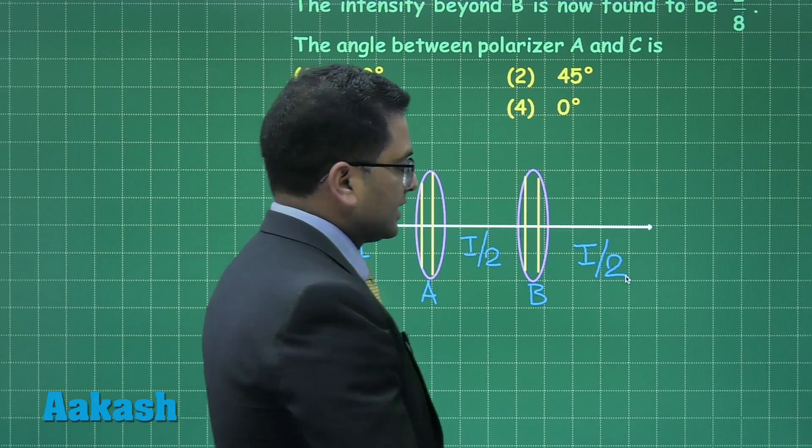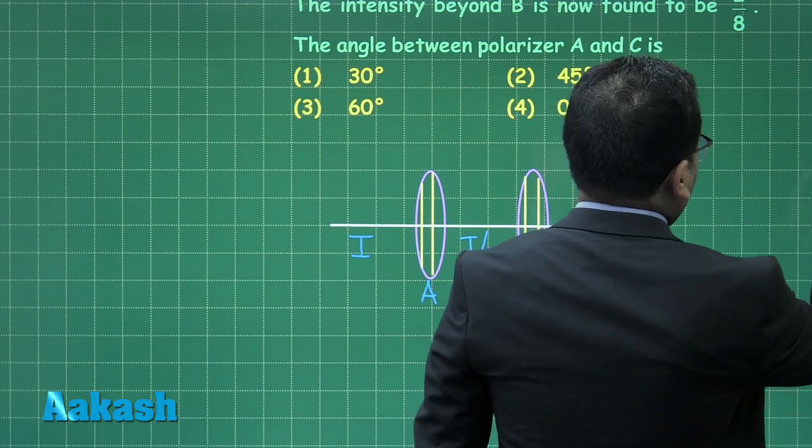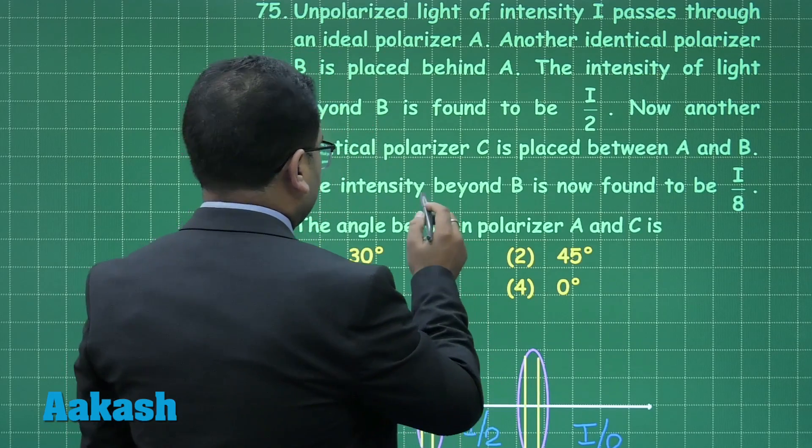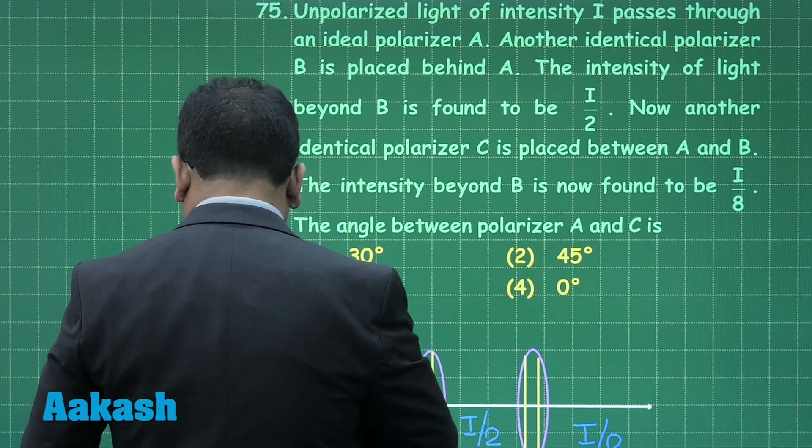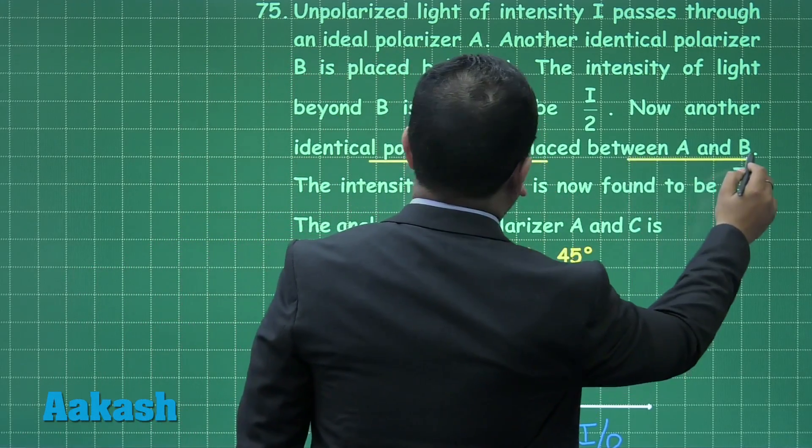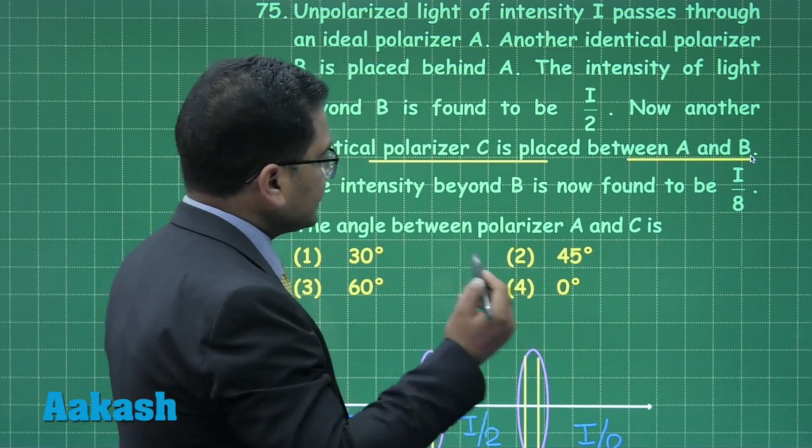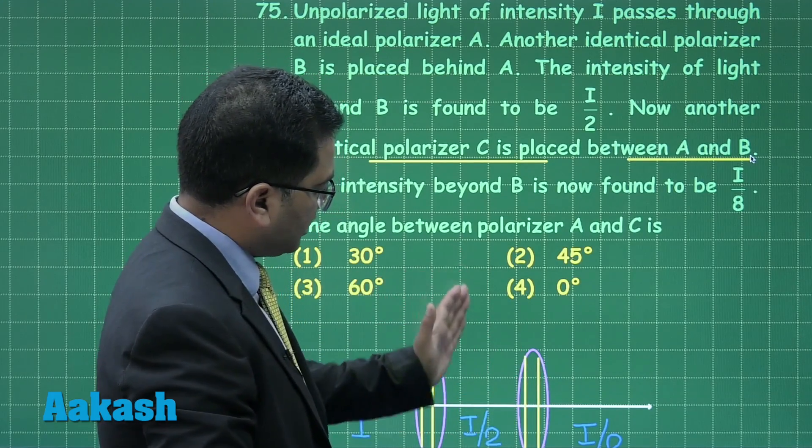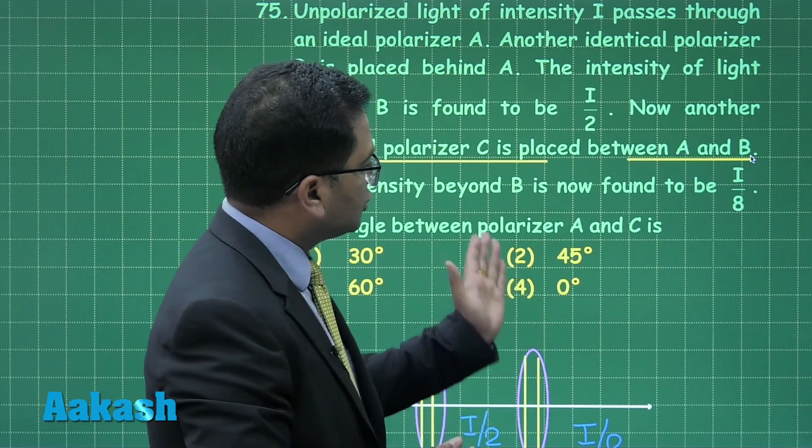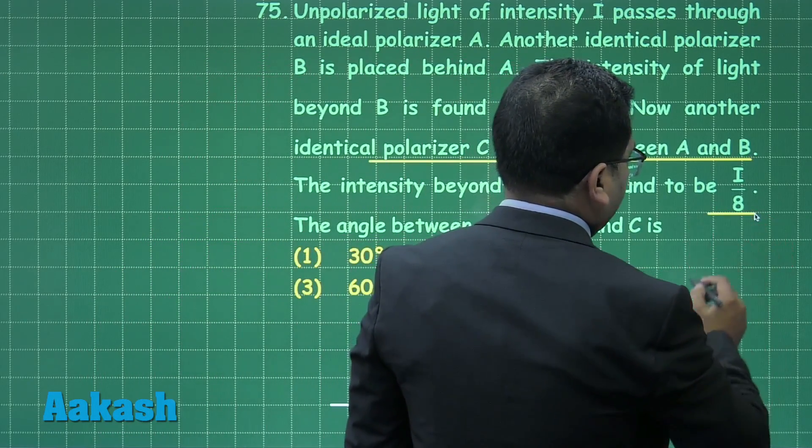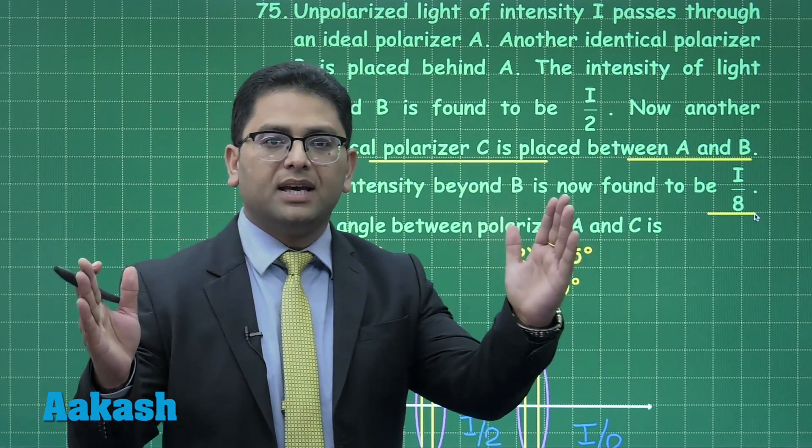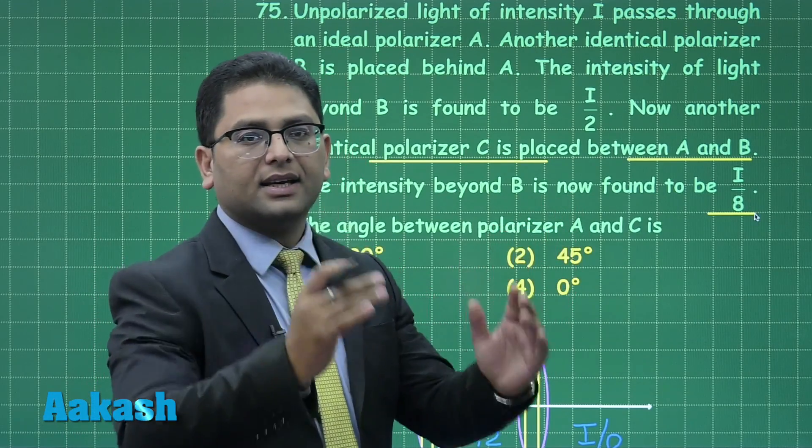Now another identical polarizer C is placed between A and B, and the intensity beyond B is I by 8. We need to calculate the angle between polarizer A and C. So A and B are at the extreme, C is in the middle.